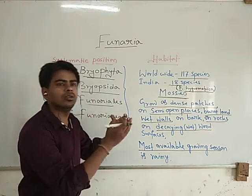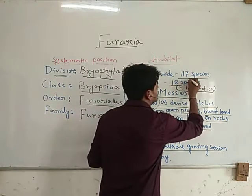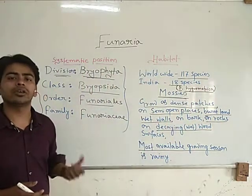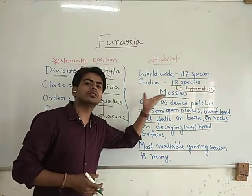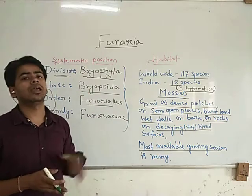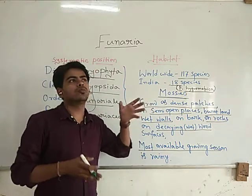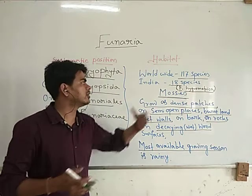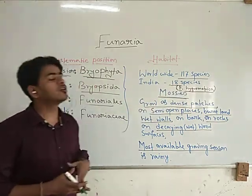Worldwide, there are almost more than seventeen thousand different species. If we are talking about India, then many different species are available. The most important or most available member in India is Funaria hygrometrica.